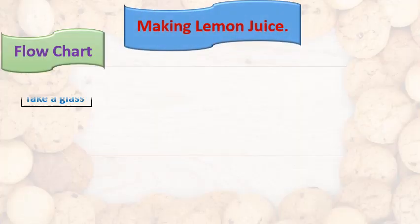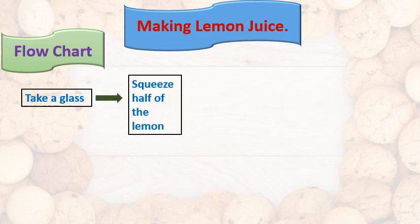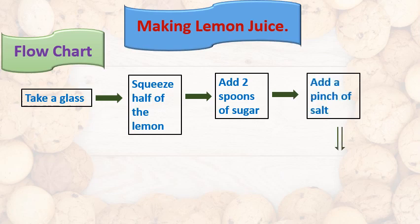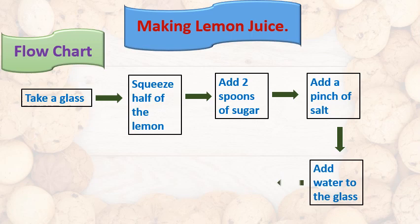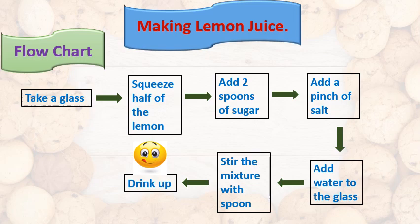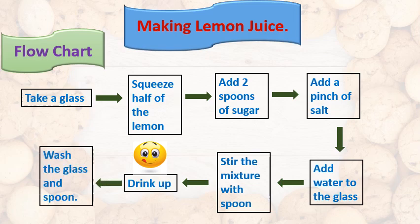Now, the flow chart. Take a glass, then follow the steps: squeeze half of the lemon, add two spoons of sugar, add a pinch of salt, add water to the glass, then stir the mixture with the spoon. Drink up — very tasty! Then wash the glass and spoon. Don't leave this work for your mother — wash the glass and spoon carefully.